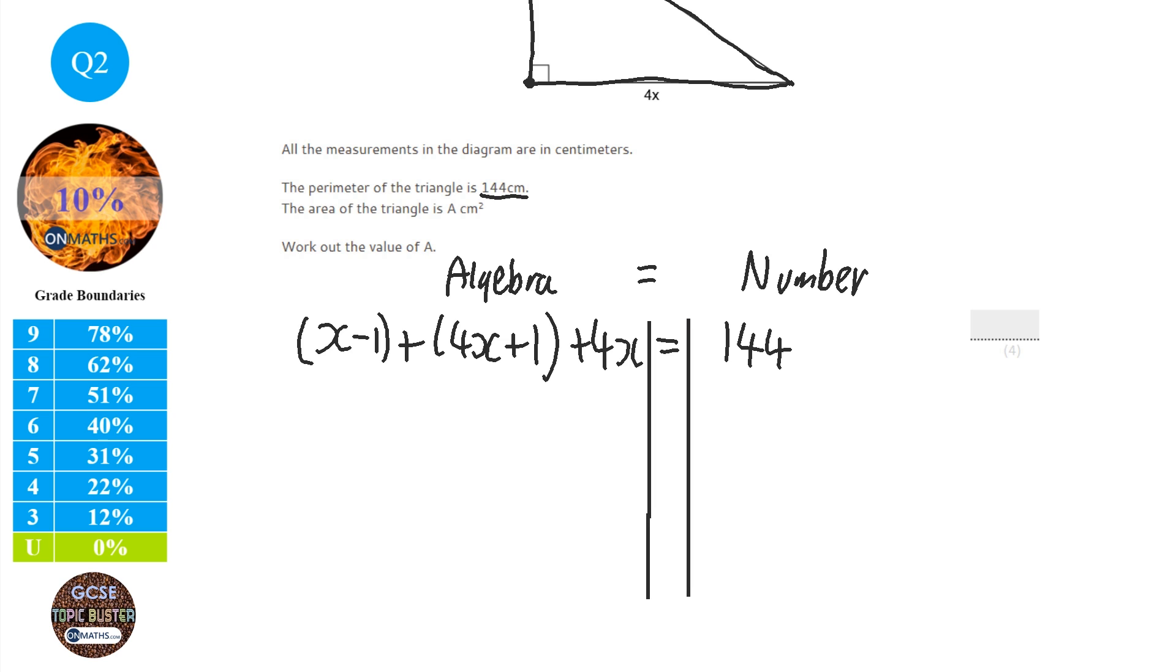So we're going to collect the like terms on the left hand side. So we've got x plus 4x plus 4x, which will be 9x. Then we've got a minus 1 plus 1. That's nothing. And there's nothing left. So it's just 9x equals 144. Now, to get rid of the 9, we need to divide by 9 because that's a times 9 on the x. So we're going to do 144 divided by 9, which is 16. So x equals 16.